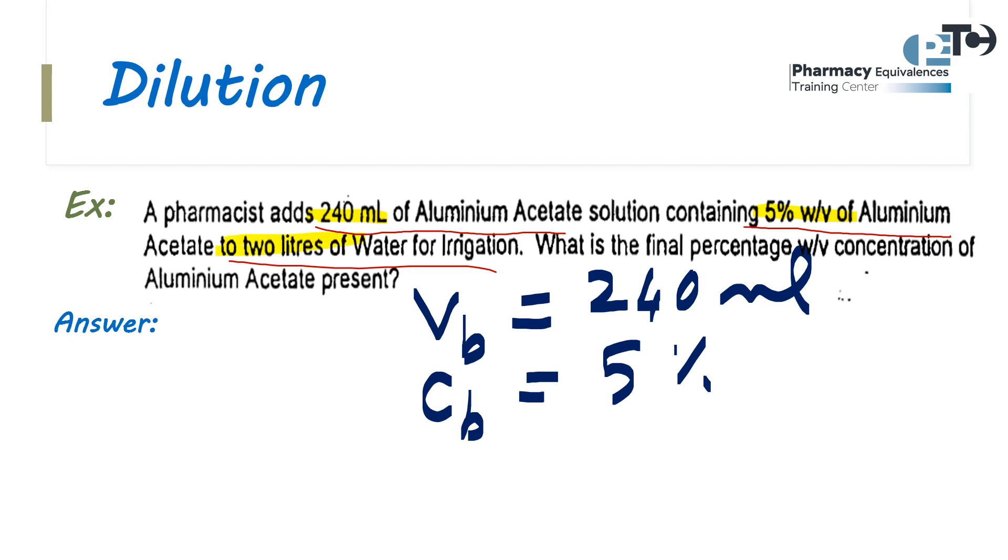Then this volume will be added to two liters, so these two liters with the 240 will be the volume after. So the volume after Va = 240 + 2000 = 2240 milliliters.